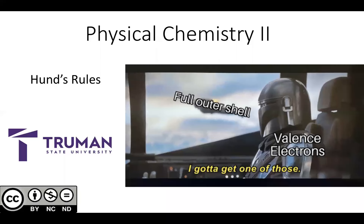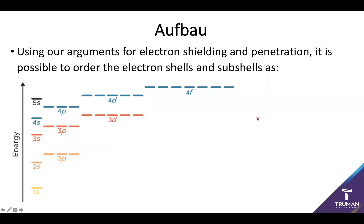Hello everybody and welcome to another great day of PCAM. Today we're going to be taking the knowledge we've gained from Z-effective about the energies of different orbitals to figure out how electrons fill up the orbitals of a multi-electron system. Using our arguments of electron shielding and penetration, we can essentially order the energies of all of our electron shells and subshells.